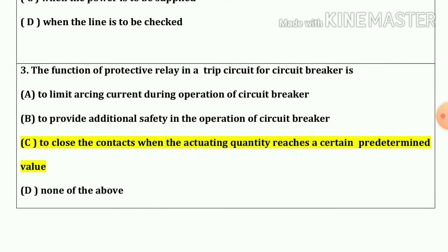Question number 3. The function of protective relay in a trip circuit for a circuit breaker is to close the contacts when the actuating quantity reaches a certain predetermined value.